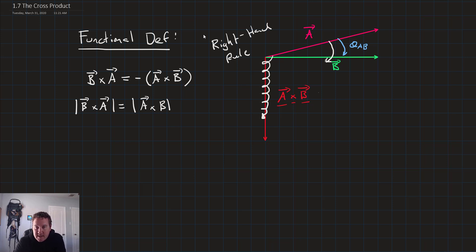And its definition is just this. We have a unit vector a sub n times the magnitude of a times the magnitude of b times the sine of theta ab. So that's our functional definition equation for a cross b.